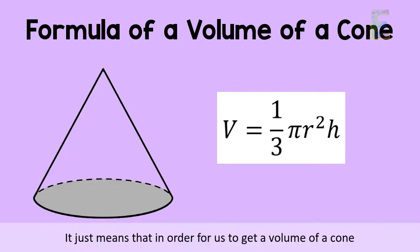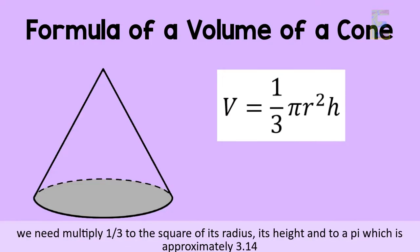It just means that in order for us to get a volume of a cone, we need to multiply one-third to the square of its radius, its height, and to a pi, which is approximately 3.14.